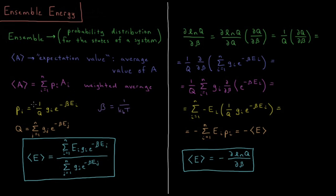As shown in the last couple of videos, the probability of observing a specific energy level in statistical mechanics is equal to 1 over the partition function, times the degeneracy — the number of states in that energy level — times the Boltzmann factor, e to the minus beta times the energy of that level. Where beta is the inverse temperature, 1 over the Boltzmann constant times temperature.